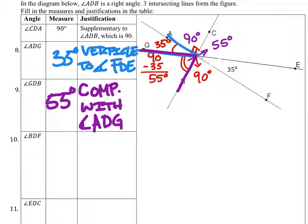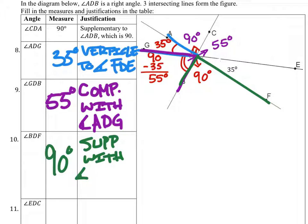Angle BDF, which is this one right here, that one is 90 degrees. And we could say that it is supplementary with angle, well, BDA, I guess. Yeah, even though in this description we said that it was vertical to angle ADC, it also is supplementary with angle BDA.